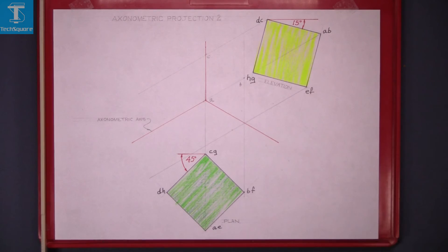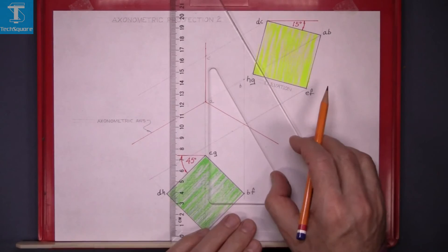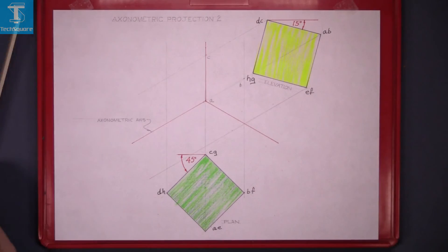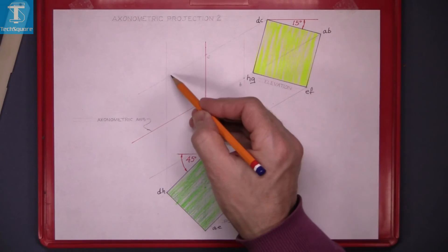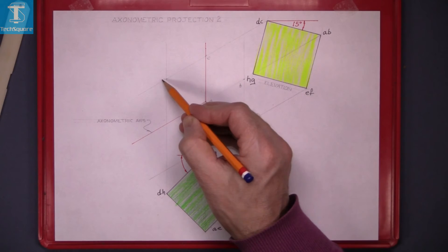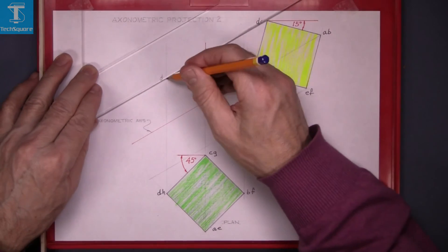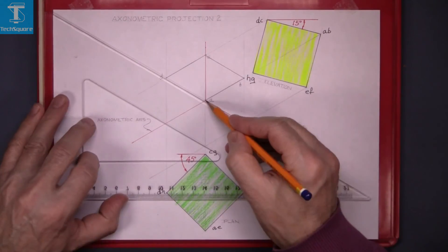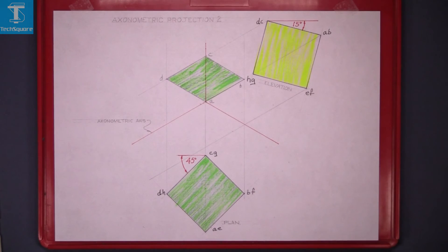Point D is the top corner and the outside here on the left on the plan so draw up from D and come out from D in the elevation and that gets you point D there. Now line in that top surface and that's the top piece done now.